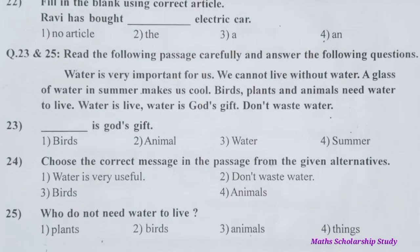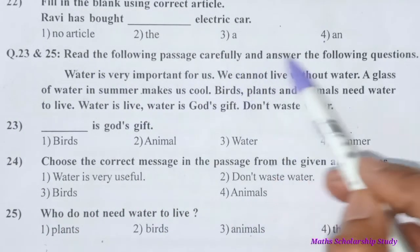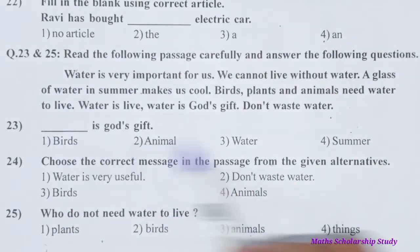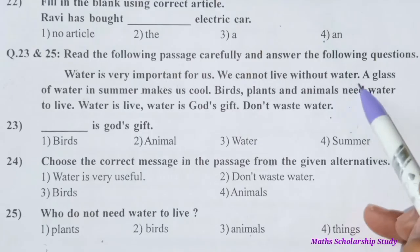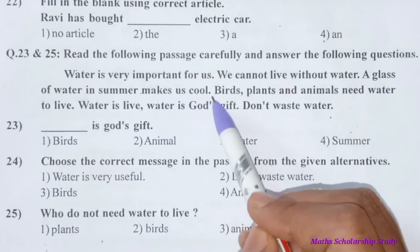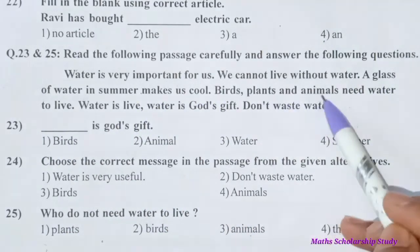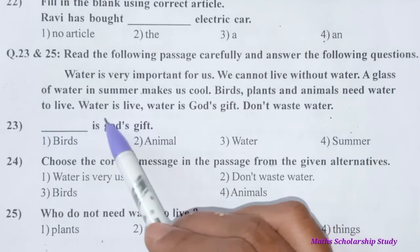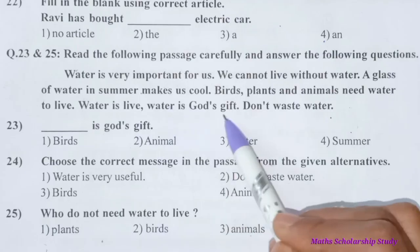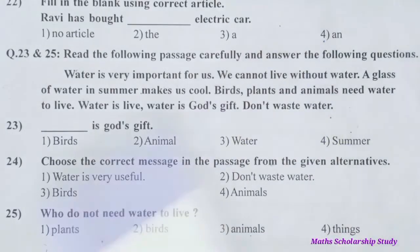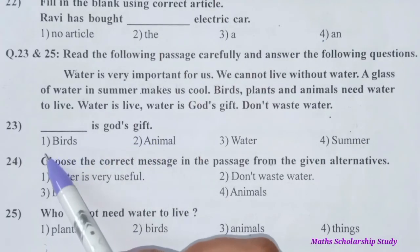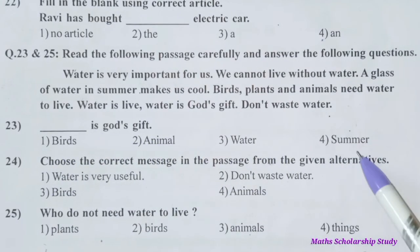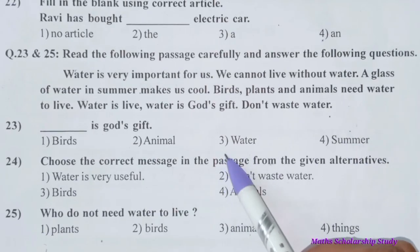Questions 23 to 25: Read the following passage carefully and answer the questions. Passage: Water is very important for us. We cannot live without water. A glass of water in summer makes us cool. Birds, plants, and animals need water to live. Water is God's gift. Don't waste water. Question 23: ___ is God's gift. Options: birds, animals, water, summer. The correct option is water — water is God's gift.